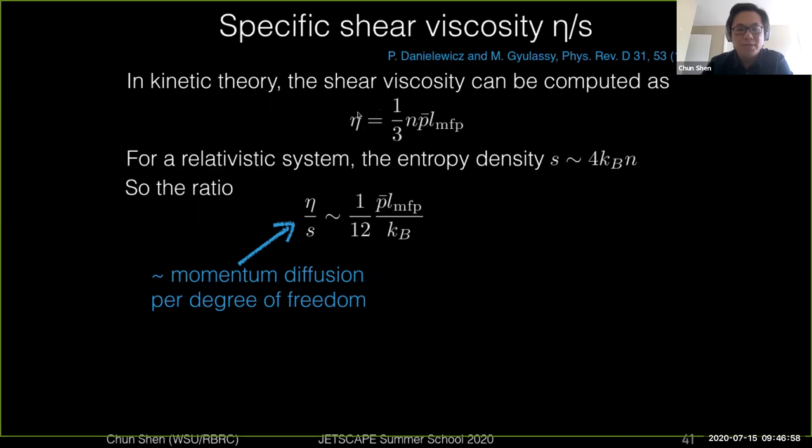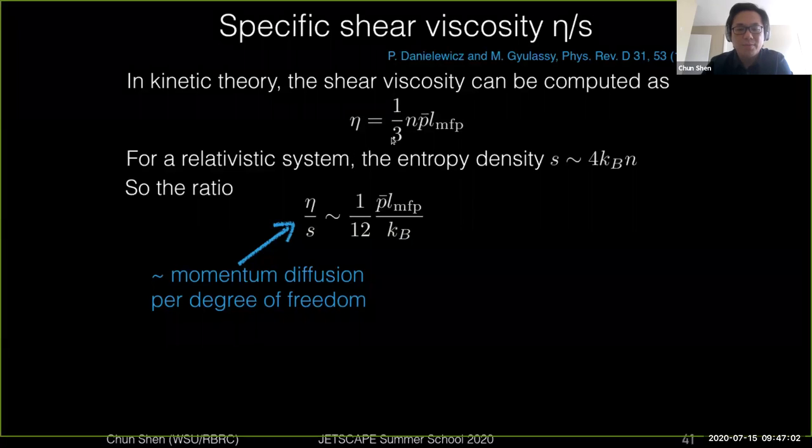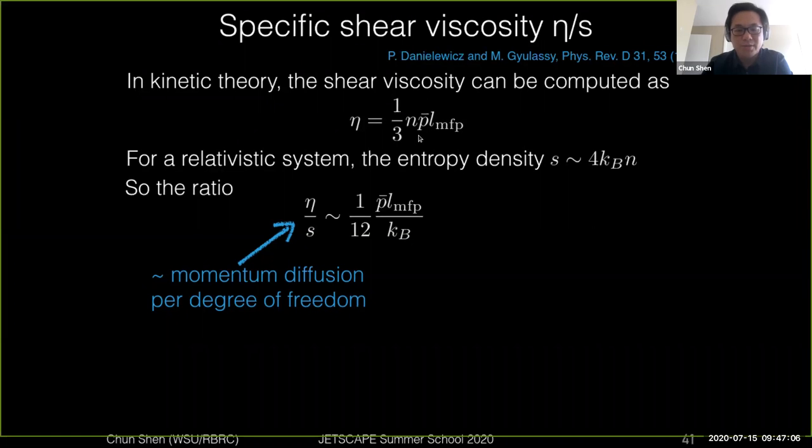In the kinetic theory, the shear viscosity eta can be actually estimated by basically the momentum exchange per particle through two layers. You can actually calculate the shear viscosity as one-third of the particle density times the mean momentum times the mean free path. So basically it describes how many particles will actually go through two layers in one direction. The one-third is because we are considering three dimensions here.